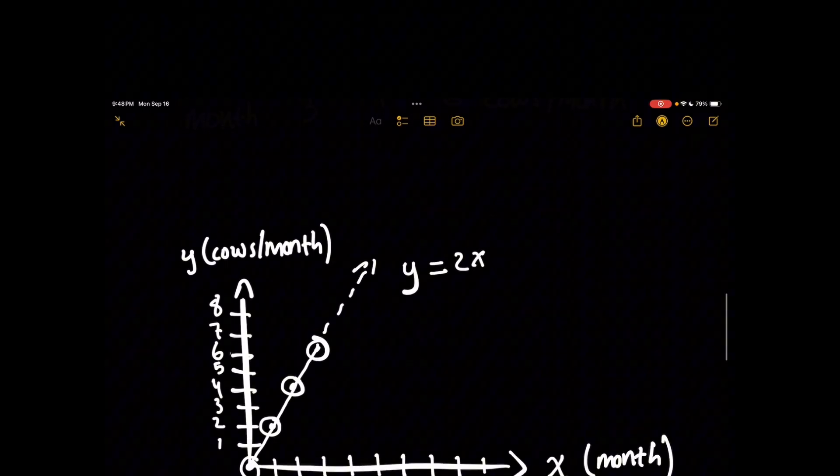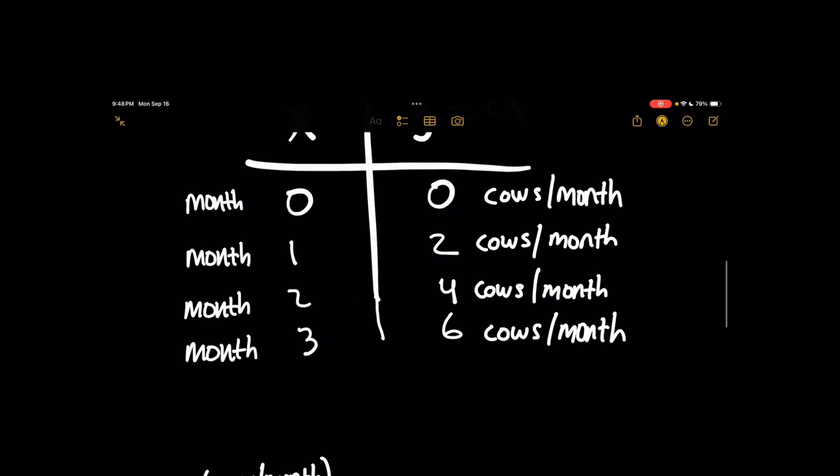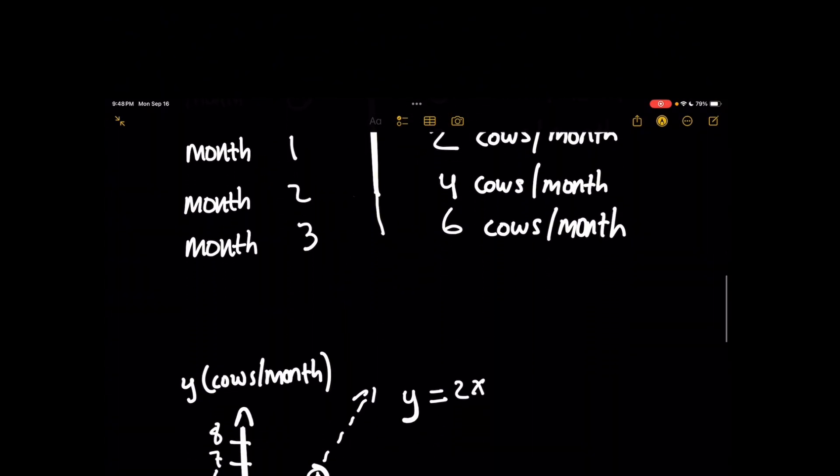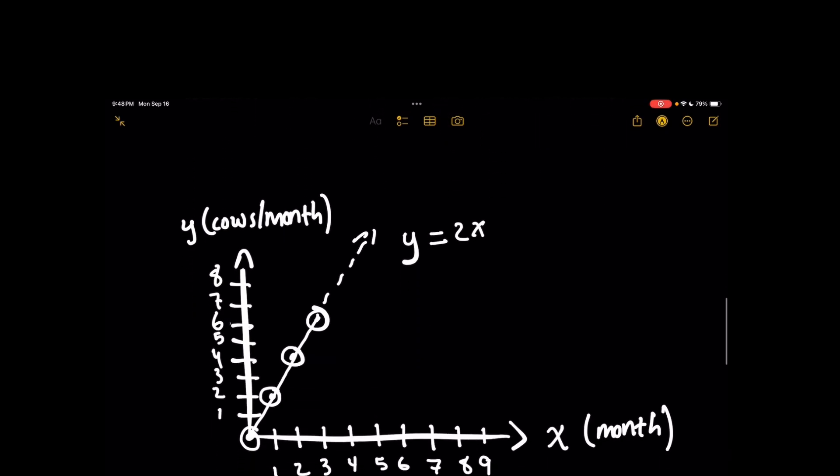So in month three, we would do three times two, so that means in month three, we are growing six cows per month. That's exactly right. So moving forward, now we can take that table, and we can treat each row as a point on a graph. For the first row, you got 0, 0. The next one is 1, 2, then 2, 4.